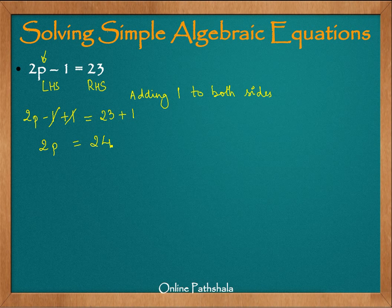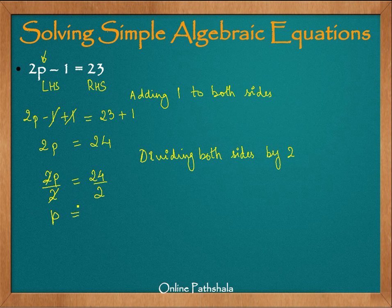Now, this is what we get but we still don't have an isolated p. There is still 2 which is multiplied by p. We can solve this if I divide 2p by 2, then the 2 gets cancelled out. So our next operation would be dividing both sides by 2. So 2p divided by 2 equals 24 divided by 2. This 2 gets cancelled. Therefore, we have p on the left hand side and we have 12. So p is equal to 12.